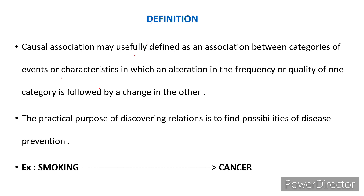If you can identify the causal factors, there is a chance of preventing a particular disease. A simple example: smoking leading to cancer. The association between smoking and cancer is a causal association.